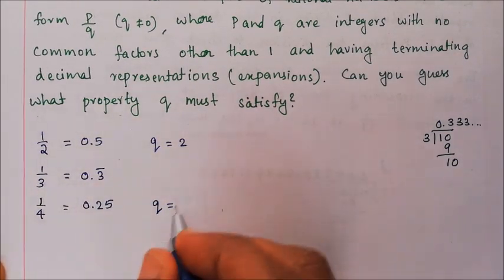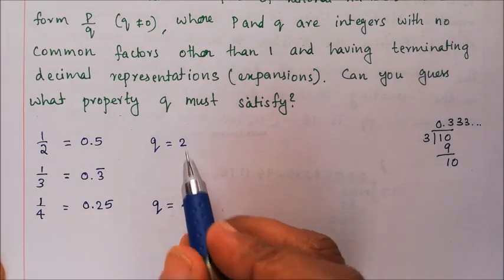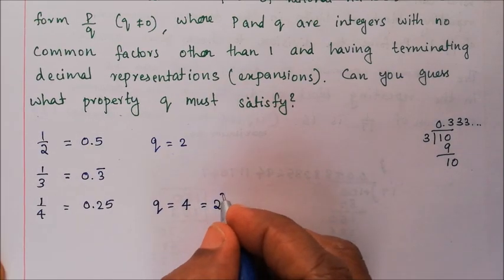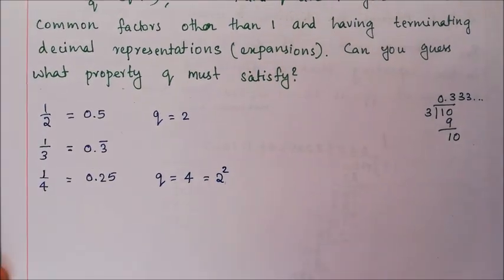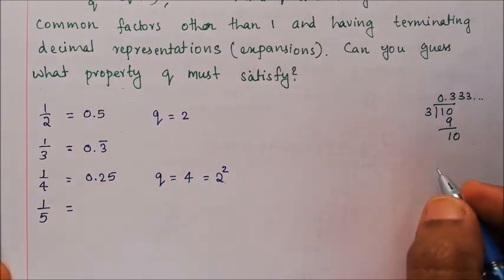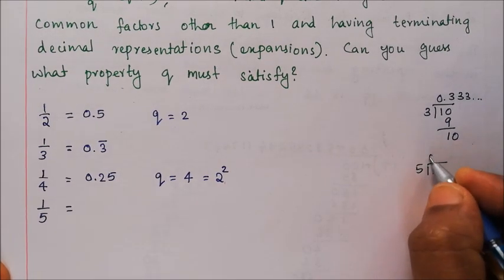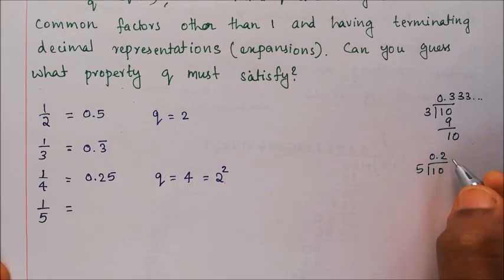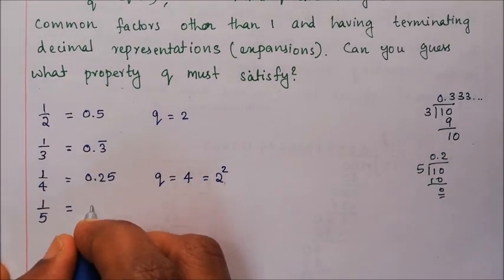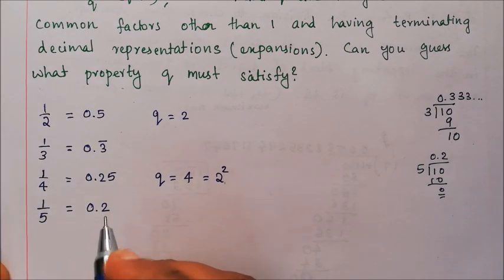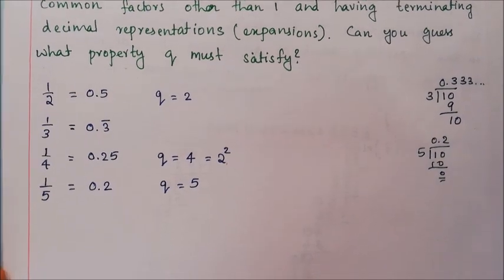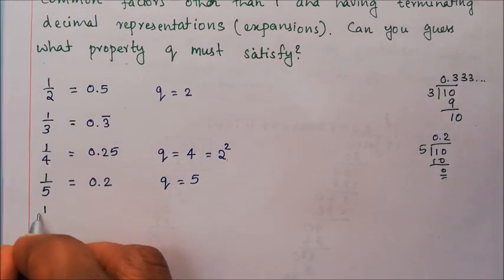Now 4 equals 2 times 2, which is 2 squared. For 1 by 5, we get 0.2, which is terminating. So q equals 5 also gives a terminating decimal.